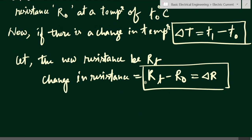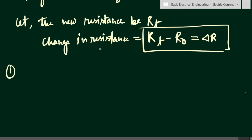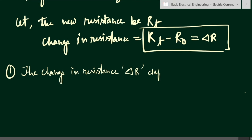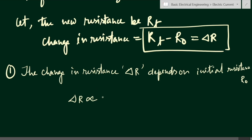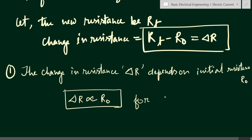We have to find out the expression for the change in resistance, delta R. The change in resistance delta R is directly dependent on the initial resistance R0. So we can write that delta R is directly proportional to R0. This condition is fulfilled for a fixed value of delta T, that is, for a fixed amount of change in temperature.